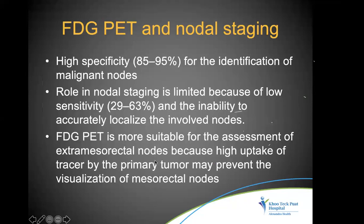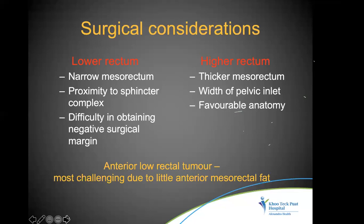FDG-PET is highly specific for identifying malignant nodes but has low sensitivity for mesorectal nodes because the surrounding primary tumor is bright and makes it hard to distinguish individual nodes. PET is more suitable for assessing extra-mesorectal nodes, where there is no surrounding high tumor uptake.